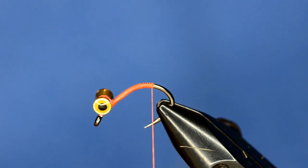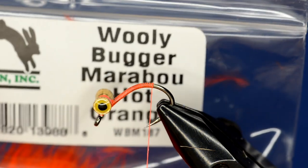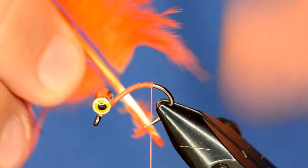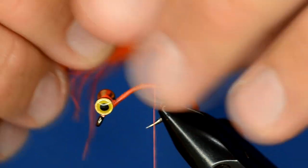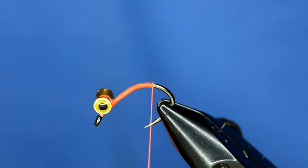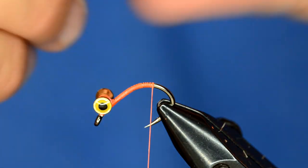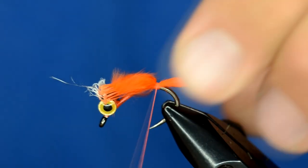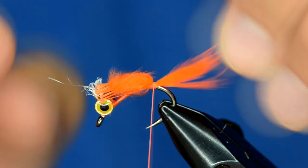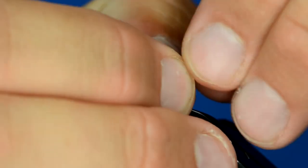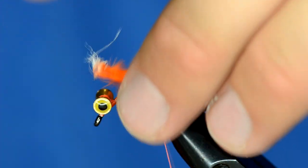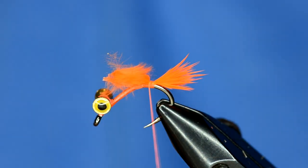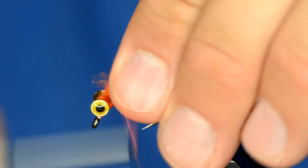This little hot spot is going to be made out of woolly bugger marabou. This is hot orange. It's a really brilliant color. So I'm just going to take about that much. I'm just going to pull it right off the stem and just kind of tie that in there. And then instead of trimming it, I'm just going to grab it with my thumbnail and just kind of pull it off. I'm going to trim off those fuzzies and then I'll just wrap this feather down onto the hook shank.